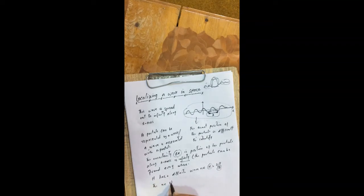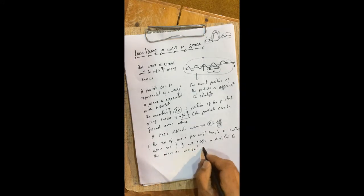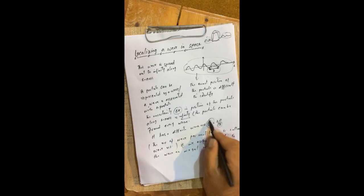Wave number is basically the number of waves per unit length. So if λ is a specific value, then the wave number k is also a definite value. Now, if we assign a definite direction to this wave number, we get what we call a wave vector.